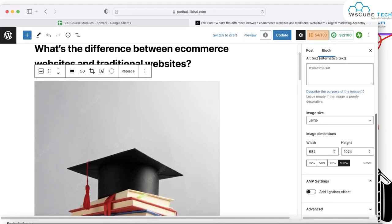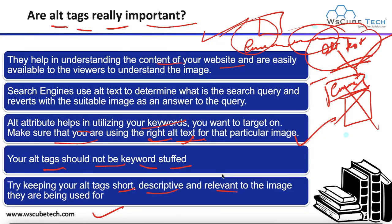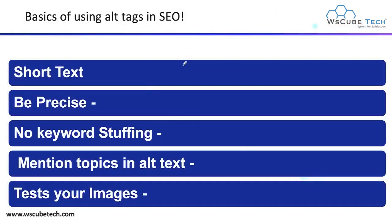Now let's cover the basics of using alt text. First, keep it short — the alt text should be kept concise because the longer the alt text, the less effective it will be. Describe the image completely with fewer words, because long alt text may become inefficient. That's why you have to keep your alt text concise and short.